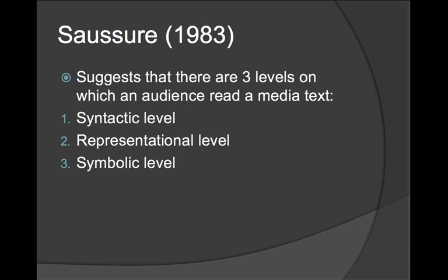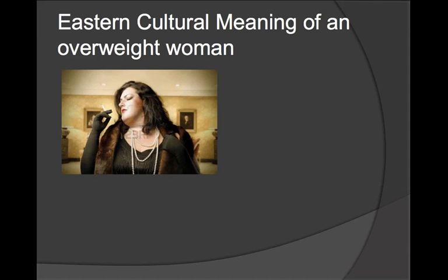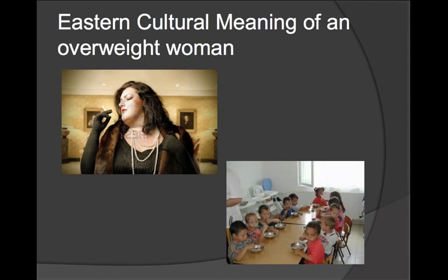When you were doing that at AS you were looking at the representational and the symbolic levels of the text. A good example is eastern cultural meaning of an overweight woman. For example in some eastern cultures an overweight woman has the connotation of being rich and wealthy, and as a result on a symbolic level they will be able to provide enough food for any future children that someone may have with them.